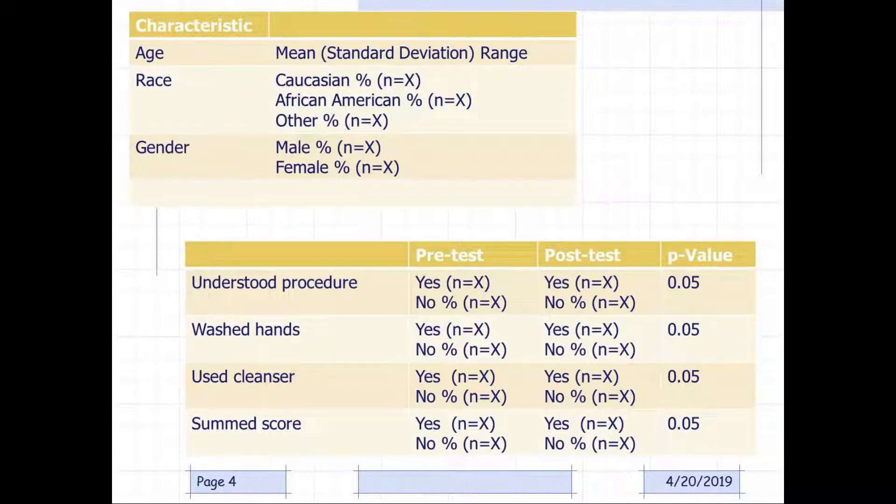Here's an example of what a characteristic table would look like for age, race, and gender, or a pre-post education test if they understood the procedure, washed their hands, used the cleanser, and the sum score.